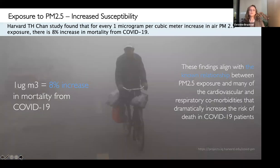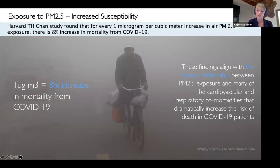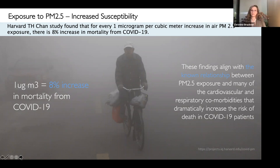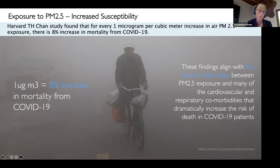The latest studies from Harvard T. Chan School of Public Health show that for every one microgram per cubic meter increase in PM2.5 exposure, there's an 8% increase in the mortality rate from COVID-19. This parameter continues to gain more reasons why we should be monitoring it and understanding its impact on human health.